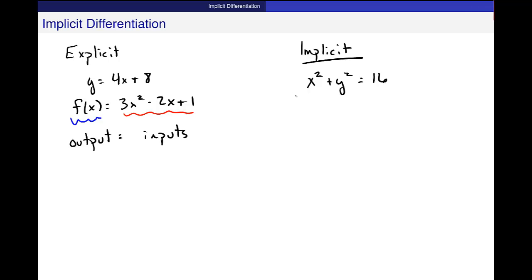So over here, explicit output equals something where I have inputs, right? And over here in an implicit definition, you have outputs and inputs mixed together.